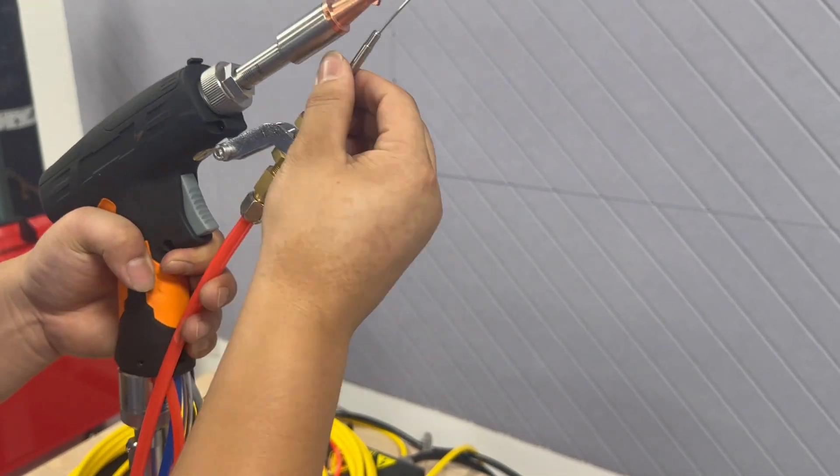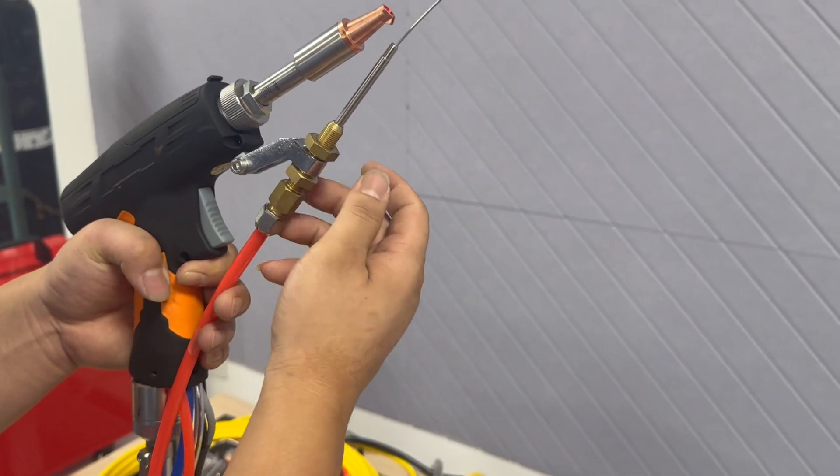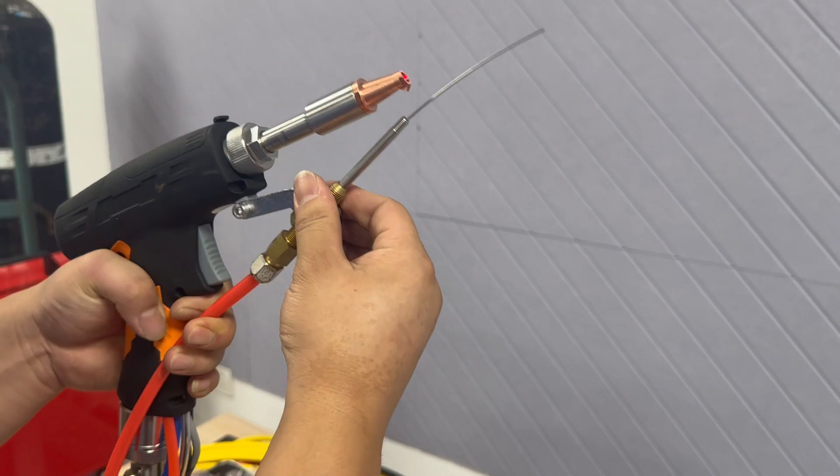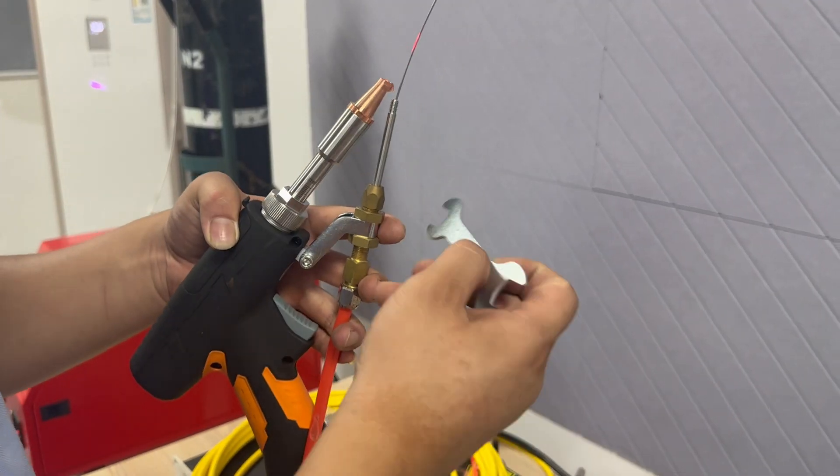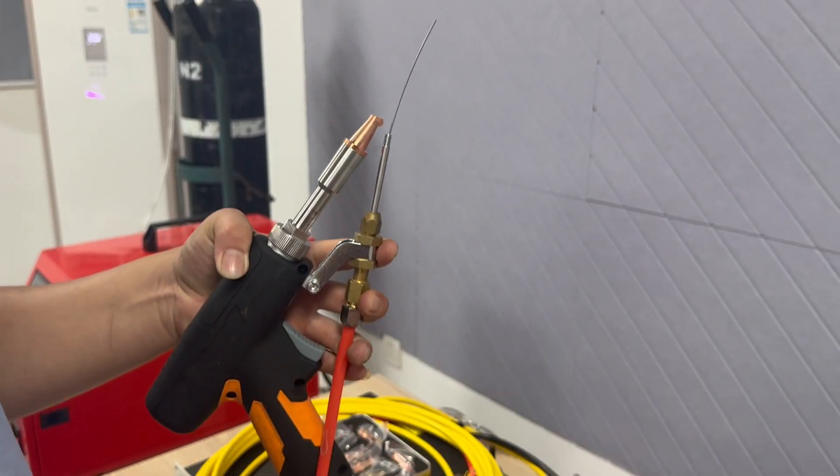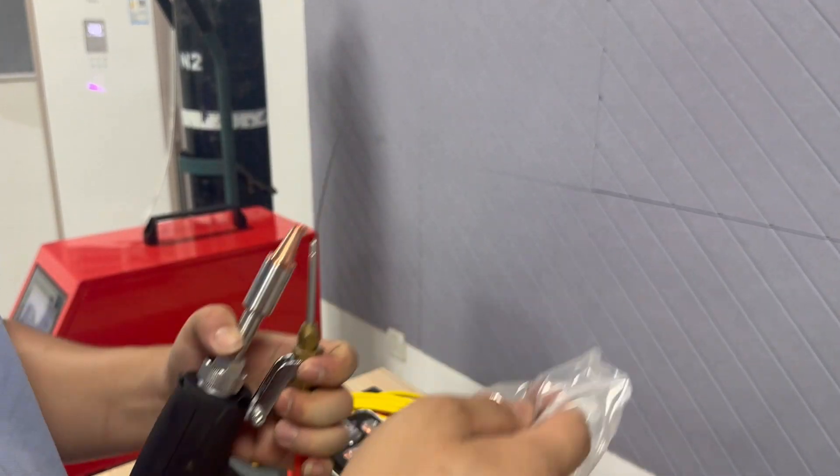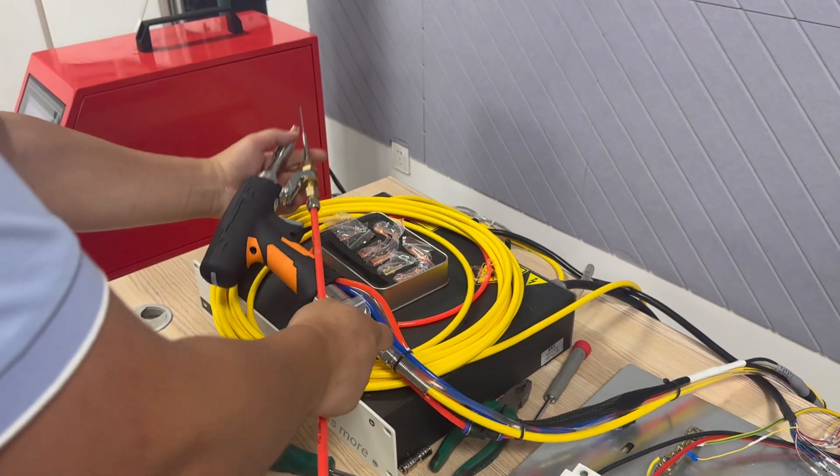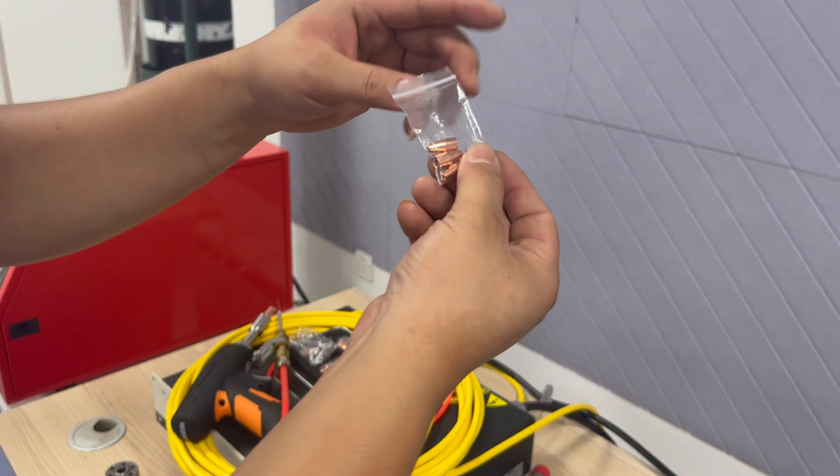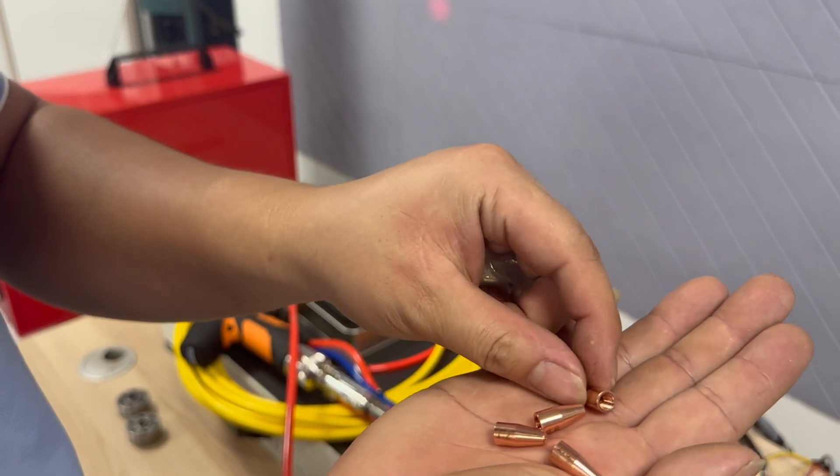And adjust it to our suitable position, tighten it. And we use 1.2 in diameter fitting wire, then we take out a small nozzle.